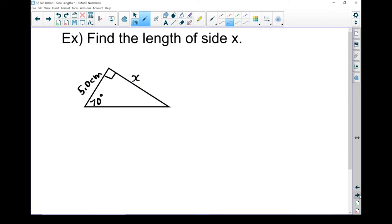Let's move on to an example. So here's a fairly typical example. Find the length of side x. We're given a couple pieces of information. First of all, we know it's a right triangle. Next, we know we've got one side is 5 centimeters long. We know one angle is 70 degrees.